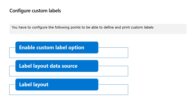In order to build a custom label, we first have to specify the form that will have the print option and that contains the information to be printed on the label. We will have to define a label data source that is linked to the primary table of this form, then define the label layout. By that, the print option will be available on the form and you could print labels from the available layouts.